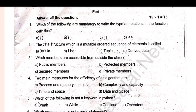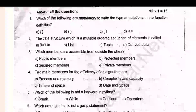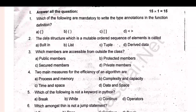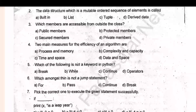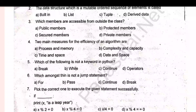The data structure which is a mutable ordered sequence of elements is called what? Which members are accessible from outside the class? Which of the following is not a keyword in Python? Which amongst the options is not a jump statement?